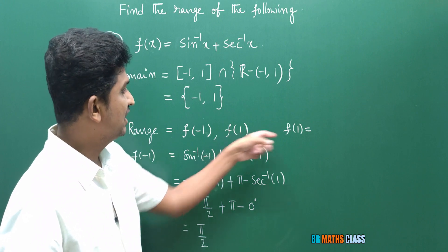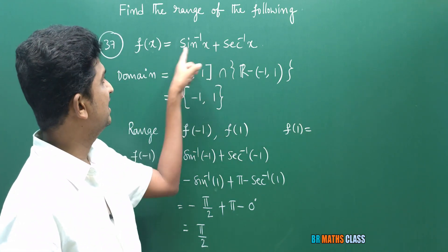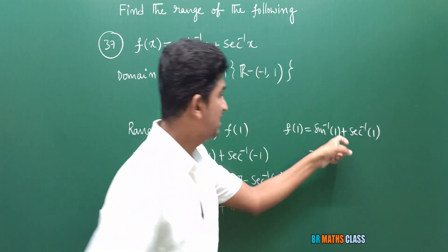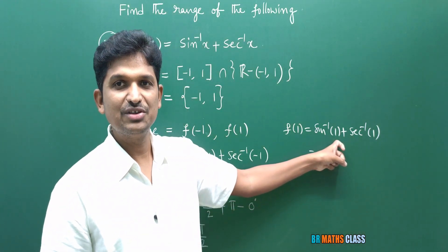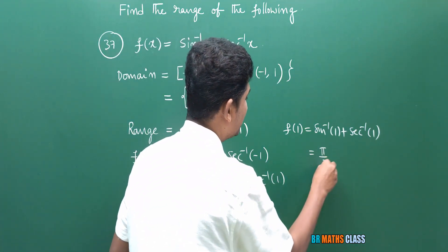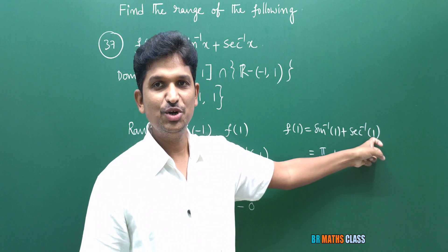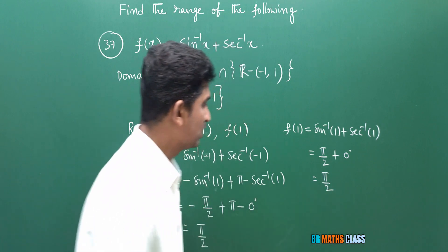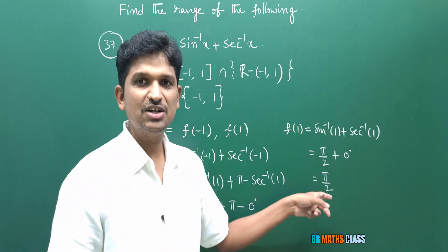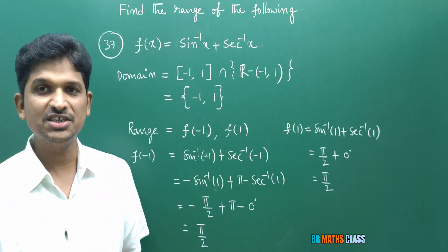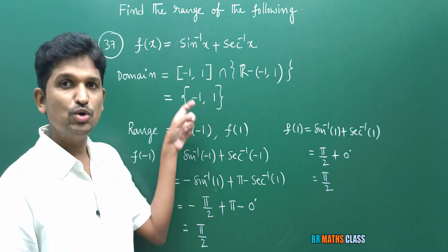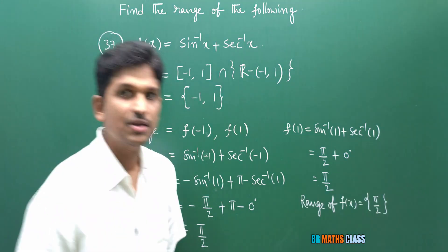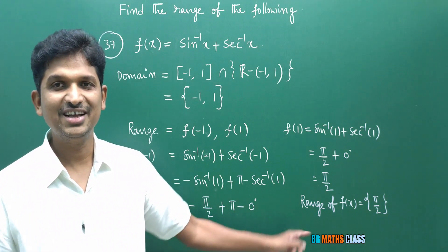Now I calculate f(1): sin⁻¹(1) + sec⁻¹(1). Since 1 = sin(π/2), sin⁻¹(1) = π/2. Since 1 = sec(0°), sec⁻¹(1) = 0. So f(1) = π/2 + 0 = π/2. Both f(−1) and f(1) equal π/2. Since the range is the set of all images of the domain, the range contains only one element: π/2.